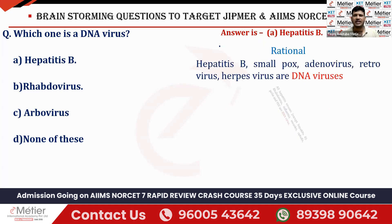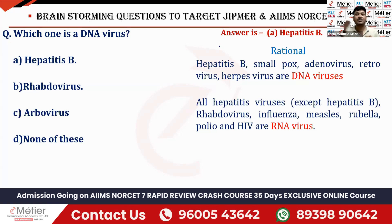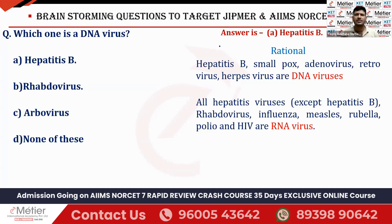You must remember which organisms fall under DNA and RNA virus — it is a memory-based question. DNA viruses include: hepatitis B, smallpox, adenovirus, retrovirus, and herpes virus. RNA viruses include: all hepatitis viruses except hepatitis B (hepatitis A, C, D, E), rhabdovirus, influenza virus, measles, rubella, polio, and HIV. So the right answer for this question is option A — hepatitis B as a DNA virus.